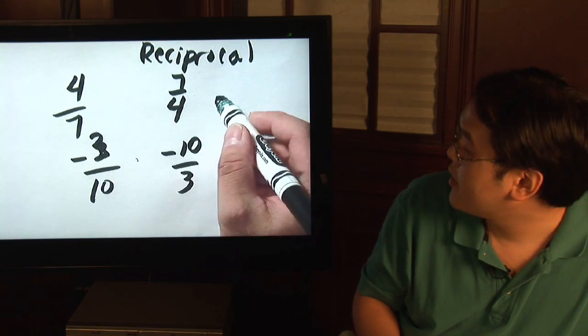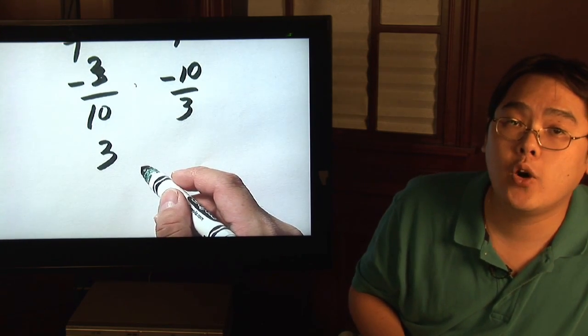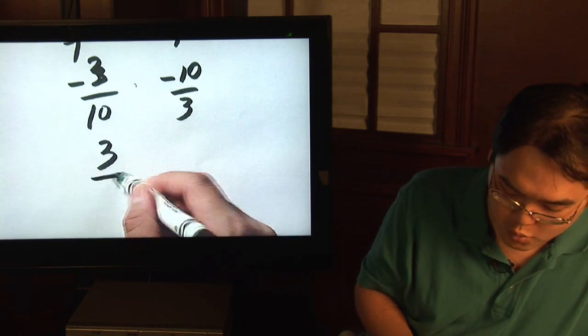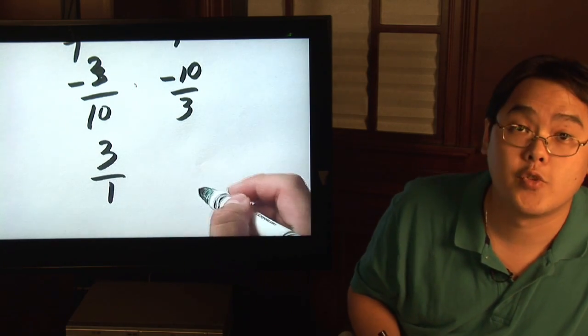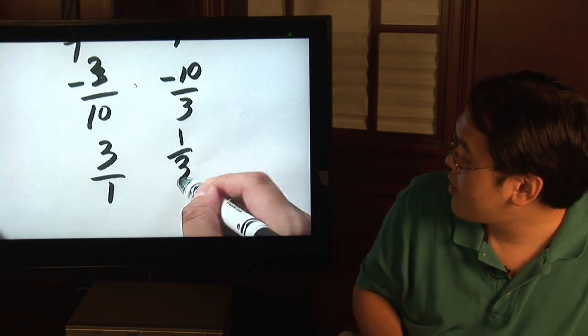What about whole numbers, like the number three? You can turn any whole number as that number over one. And then, for the reciprocal, just flip it. So, three over one flipped is going to be one-third.